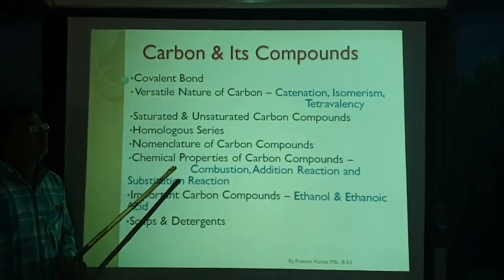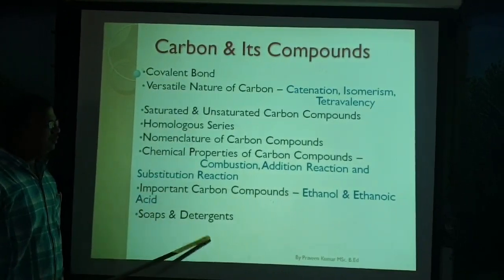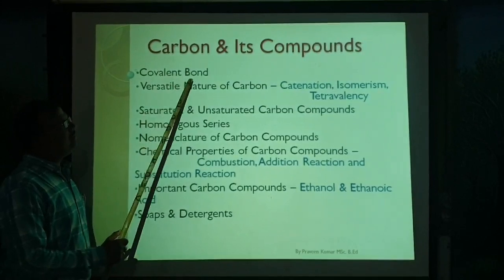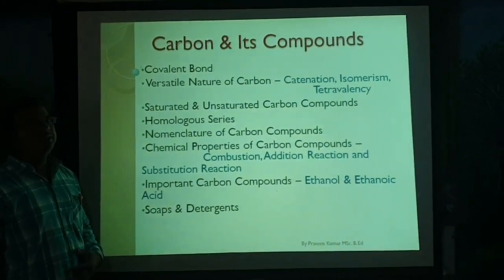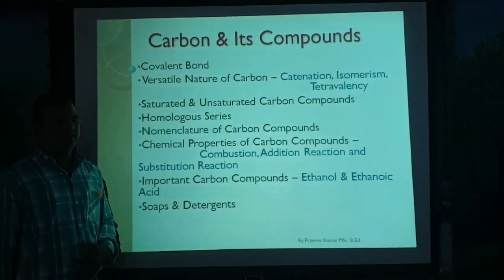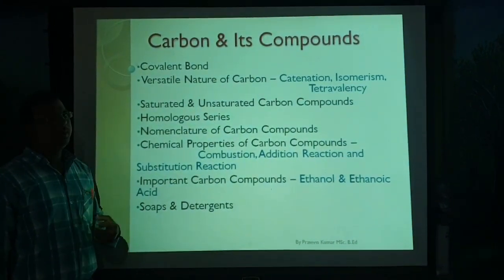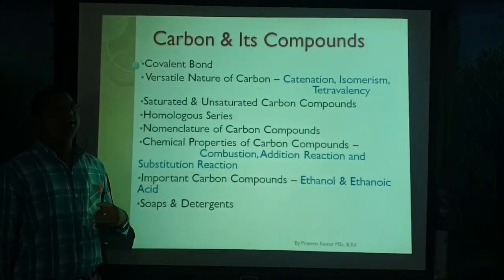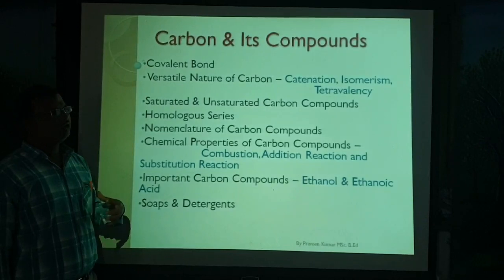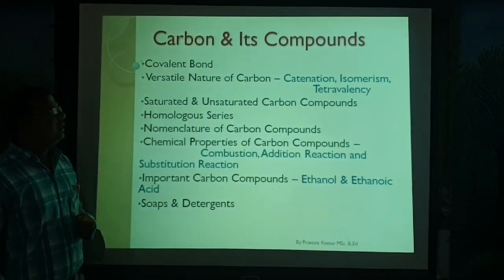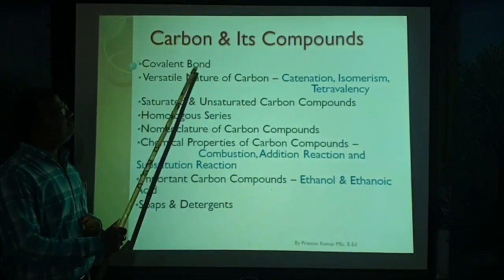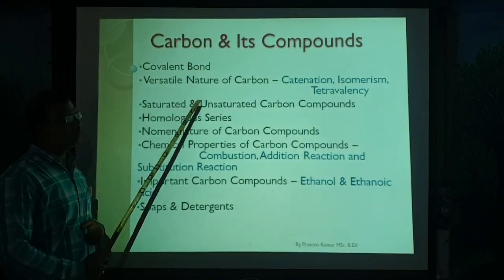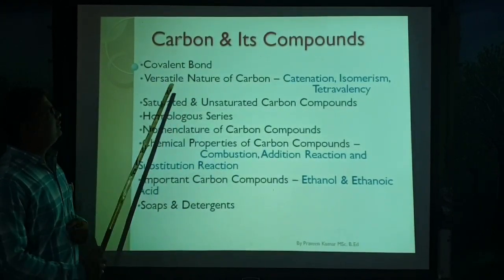In this chapter we are going to discuss all these topics. The first one is Covalent Bonds. There are different types of chemical bonds — covalent bonds, ionic bonds, hydrogen bonds, and polar bonds. Among them, one of the important chemical bonds is the covalent bond, and we are going to discuss it in this chapter.